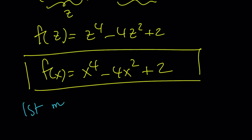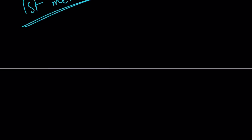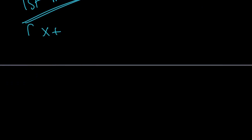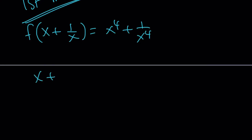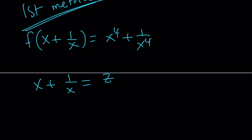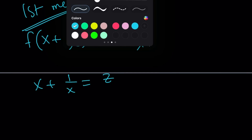Now we're going to go through the first method, and trust me, the first method is much shorter — that's why it's the first method. Here's what we're going to do one more time. The original problem is given as before and we're supposed to find f of x. I'm going to go ahead and do the same substitution: set x plus 1 over x equal to another variable z again. Instead of going through all those quadratic steps, I'm going to do the following.